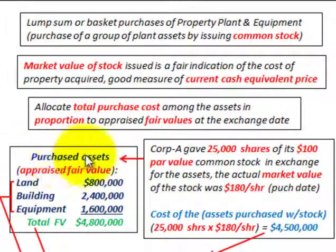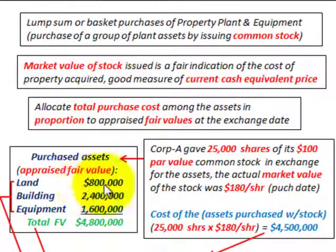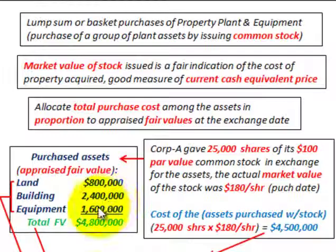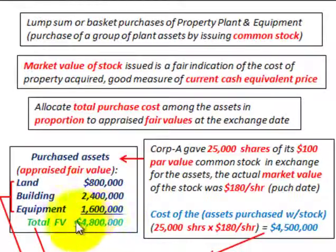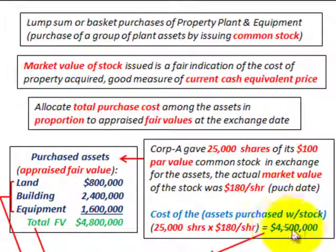Now, what did they buy? They purchased these assets and we need appraised fair values. The land has an appraised fair value of $800,000, the building $2,400,000, and the equipment $1,600,000. These are fair values, not book values. The total fair value is $4,800,000. This $4,800,000 must be allocated based on our purchase cost of $4,500,000, which is based on our stock value.